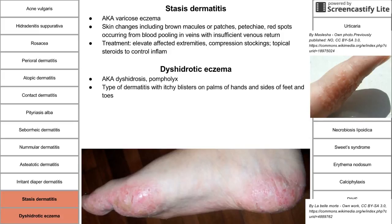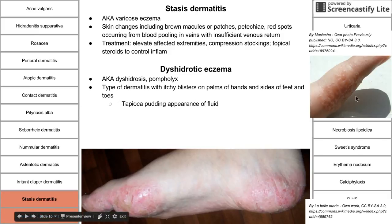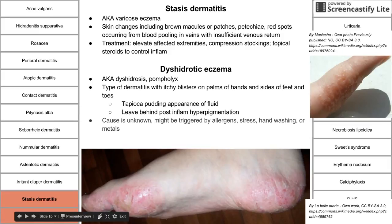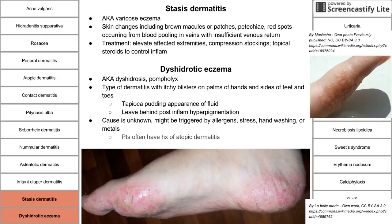Dyshidrotic eczema is a type of dermatitis with itchy blisters on the palms of the hands and sides of the feet, with a characteristic tapioca pudding appearance. Once it clears, you may be left with hyperpigmentation, which is normal post-inflammation. The cause is unknown but thought to be triggered by allergens, stress, hand washing, or metals. Patients with dyshidrotic eczema usually have a history of atopic dermatitis. Treatment is topical steroids.